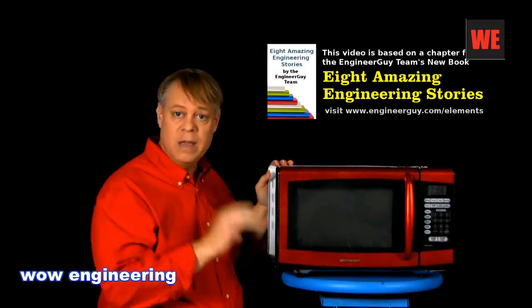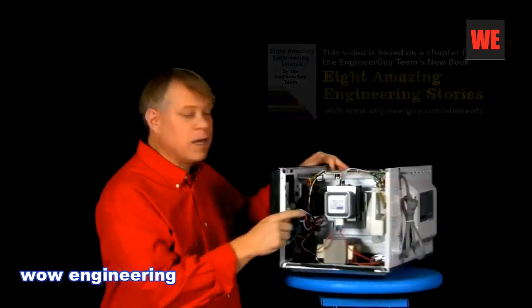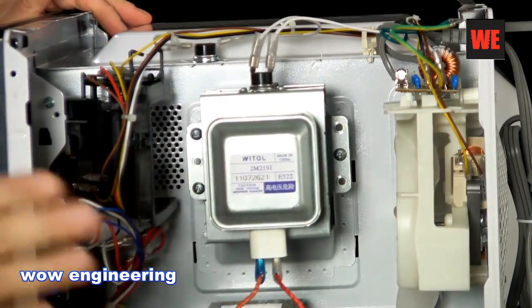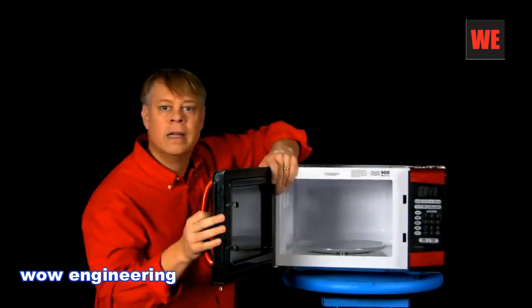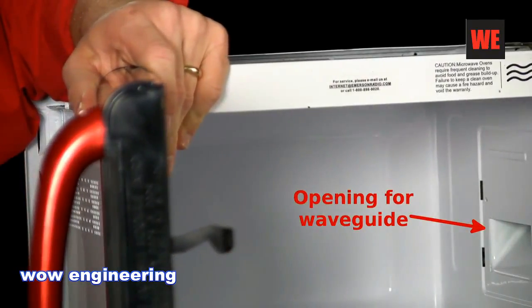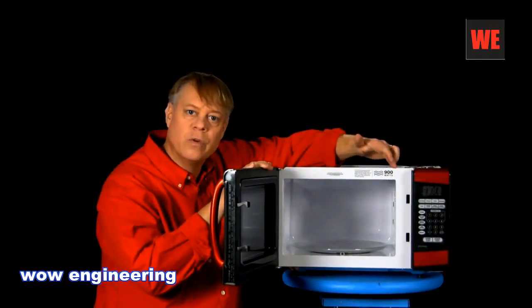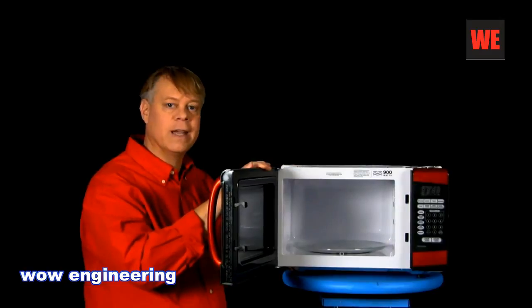A microwave contains three main components: a vacuum tube called a magnetron that generates the energy that heats food, a waveguide hidden in the wall to direct that energy to the food, and a chamber to hold the food and safely contain the microwave radiation.